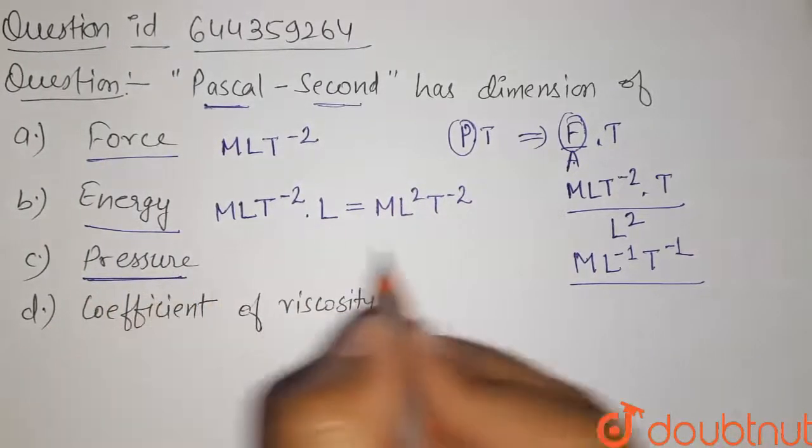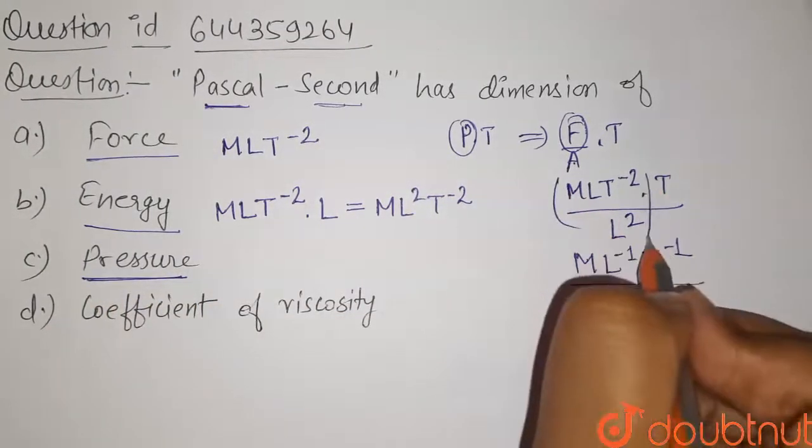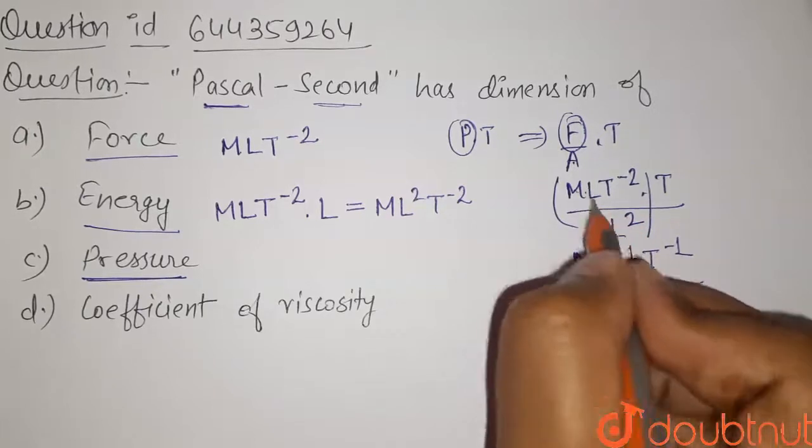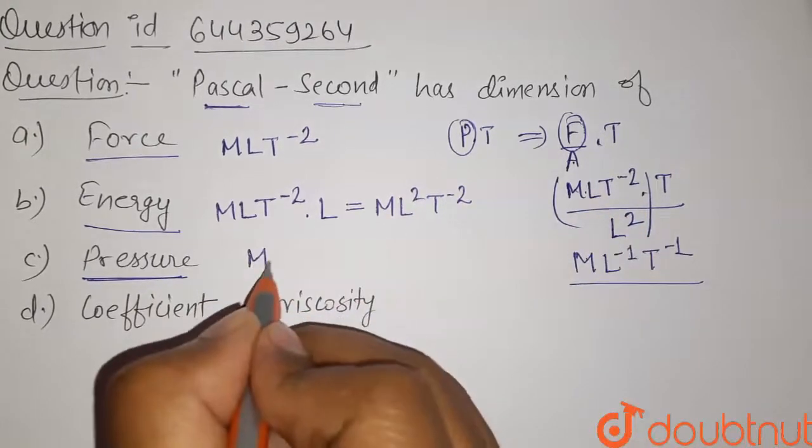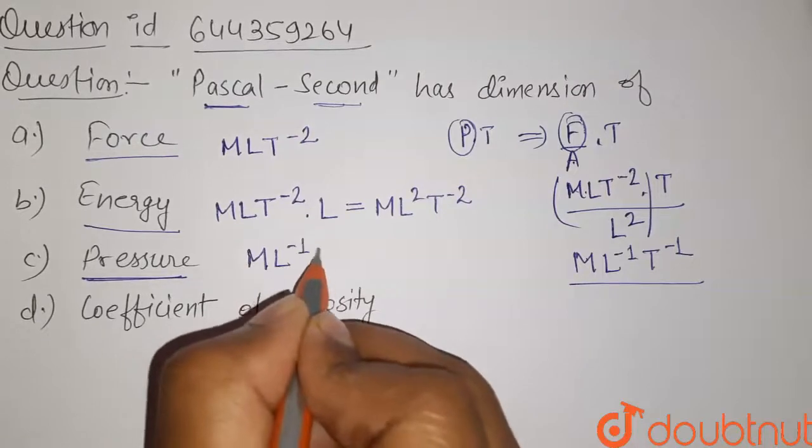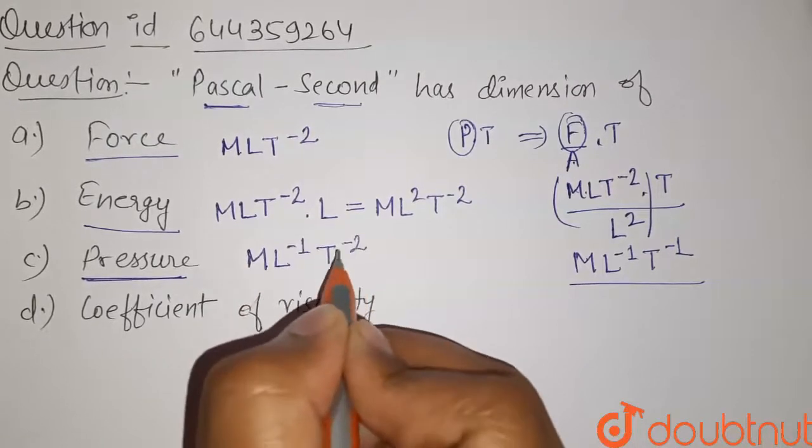Now pressure, the pressure has the dimension that we have calculated before. It is force upon area, that means its dimension will be MLT^-2 which will be ML^-1T^-2.